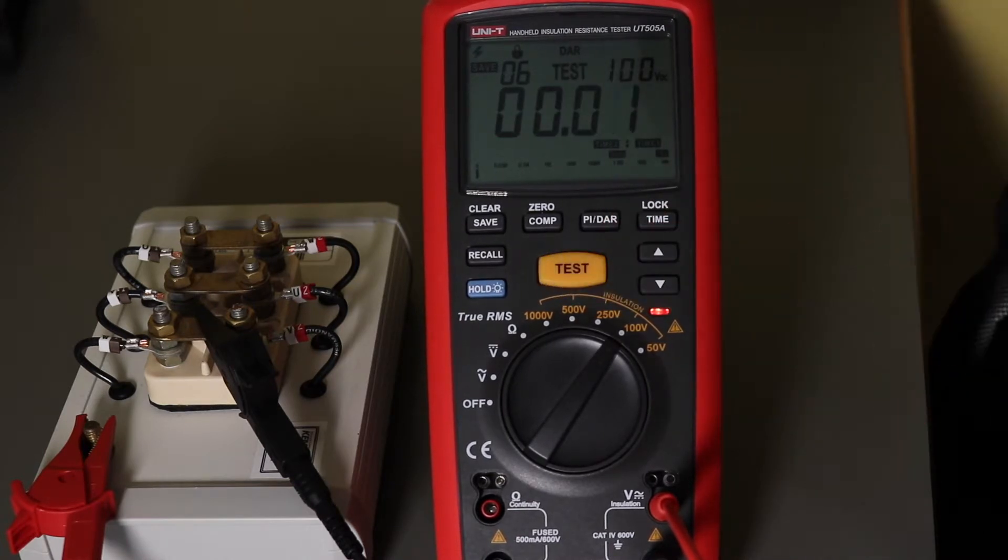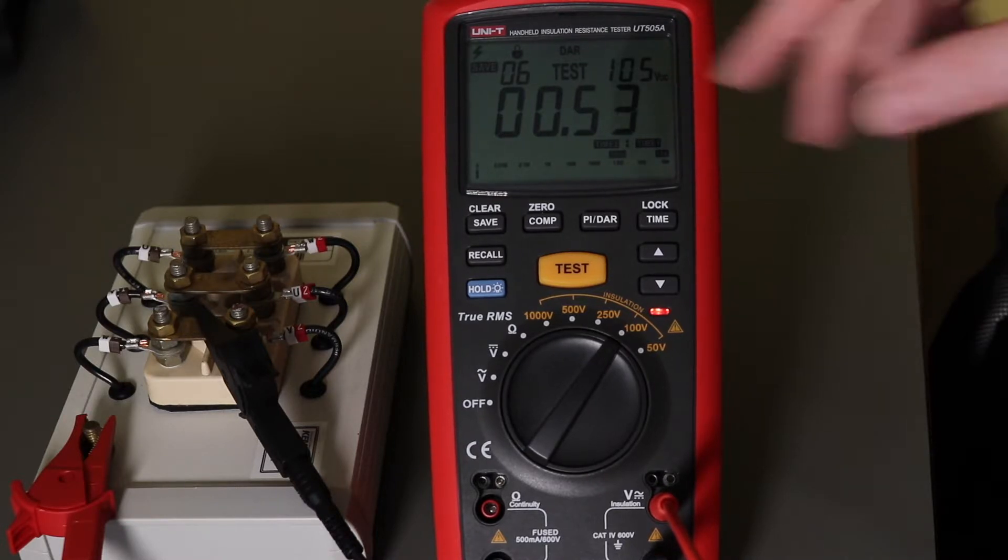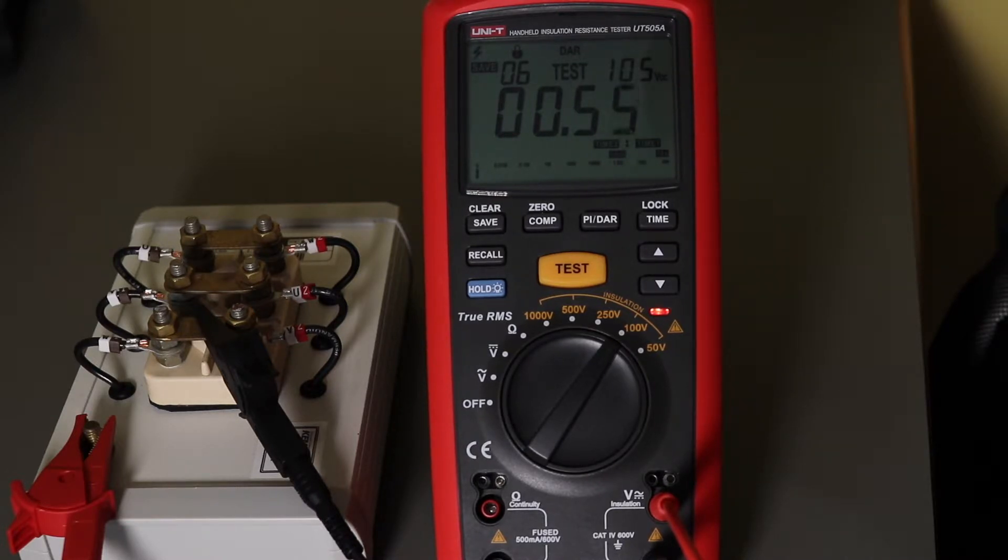So we'll hit the test button and wait for the full minute. Hopefully when it comes to one minute it should stop and record the dial ratio. As you can see during the test, 15 seconds just gone by. Time is there counting up, 52 seconds, a few more seconds and we'll see if it hopefully should stop.